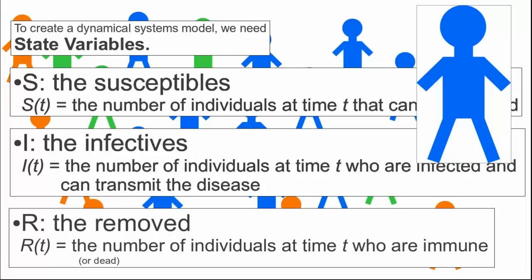Lastly we have the state variable R, or the removed. We let R be the number of individuals at time t who are immune or dead, i.e., the blue guys.